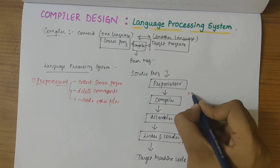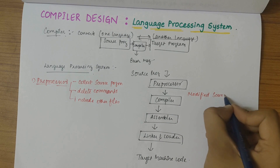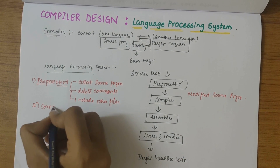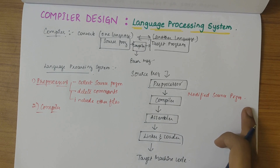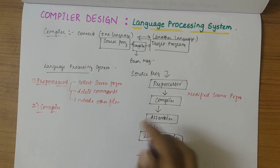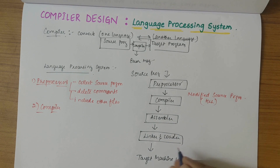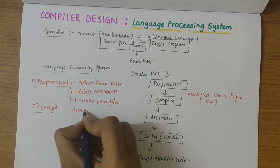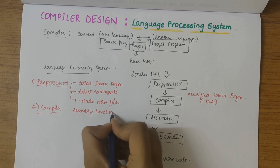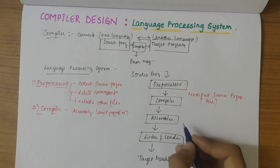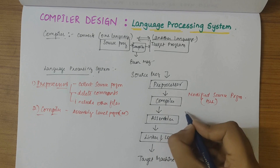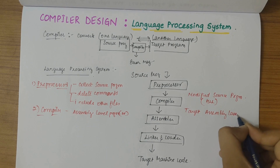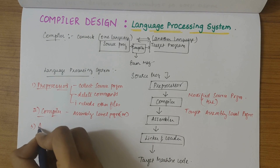The preprocessor also performs macro substitution. The output from the preprocessor is a modified source program. Next, the compiler accepts this modified source program, which is normally written in a high-level language, and produces an assembly-level program as output — the target assembly-level program.